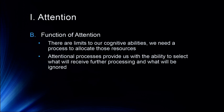So that's really what the function of attention is. There are limits to our cognitive abilities and we need a process to allocate those resources. Attentional processes provide us with the ability to select what we'll receive for processing and what will be ignored. We can listen to one voice in a crowded room or select one thing from our visual world. If we're watching a hockey match, we may be trying to follow the puck around the rink. If we're out walking our dog, we're going to focus on where our dog is — especially if the dog's off the leash. It's a really important process by which we accomplish our day-to-day tasks.